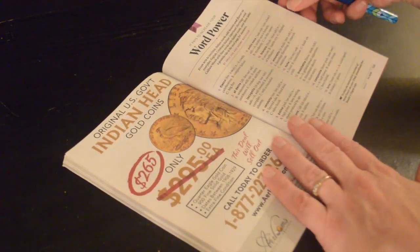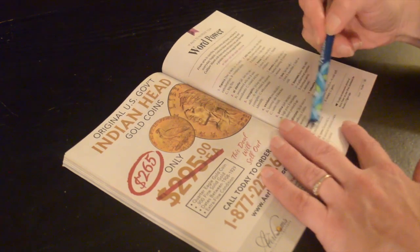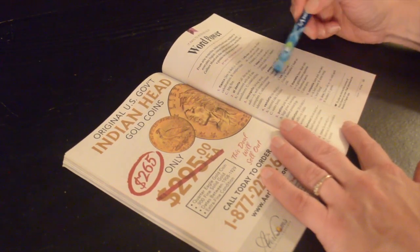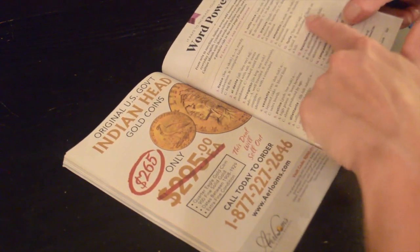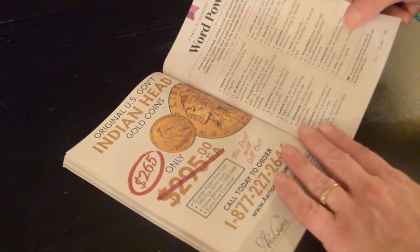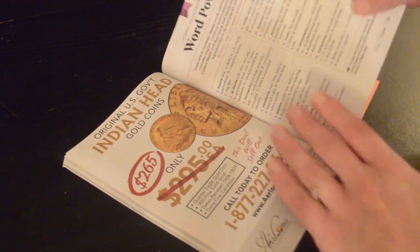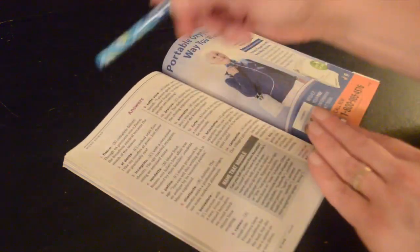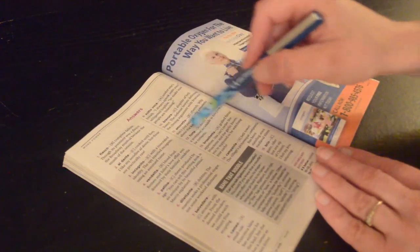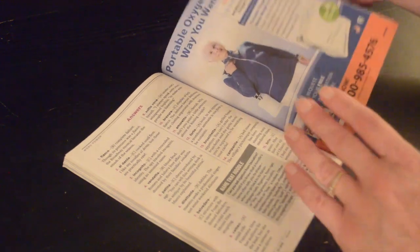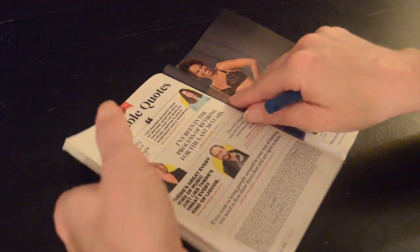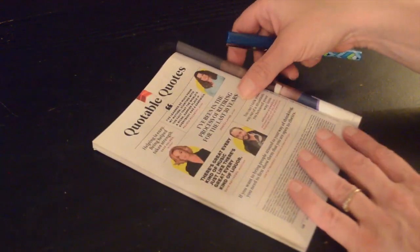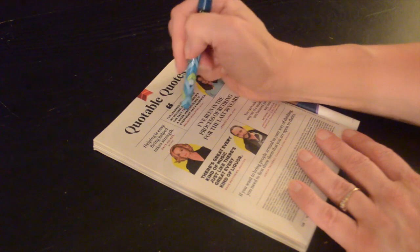And let's see. Word power here. Just lists lots of not very well-known words. And gives you multiple choice so you can try to quiz yourself on the definitions. Go to the answers back here. And that's it. Let's see, quotable quotes. I do like this little section here. So, I'll just read these.